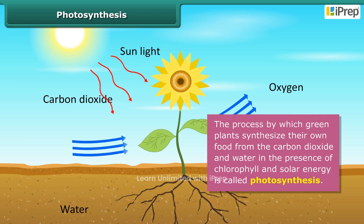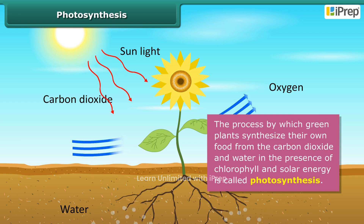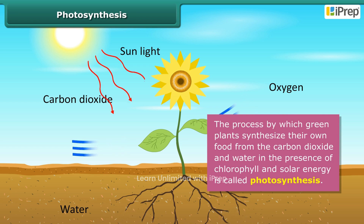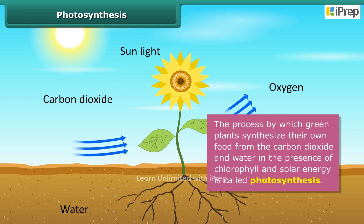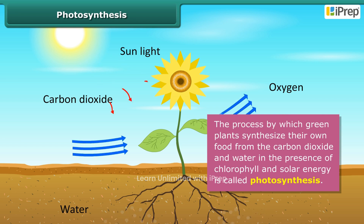green plants synthesize their own food from carbon dioxide and water, in the presence of chlorophyll and solar energy.